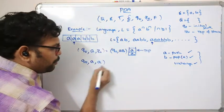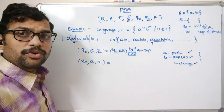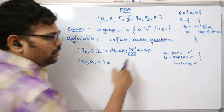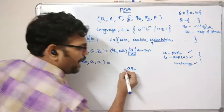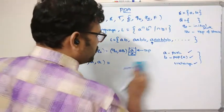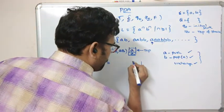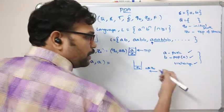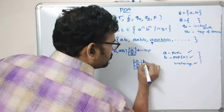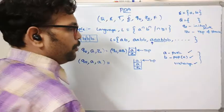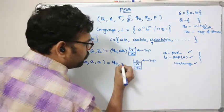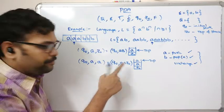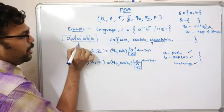Since whenever 'a' is encountered we push, we remove 'az₀' from the top, add the new 'a', and push back into the stack. After pushing from right to left — z₀, then a, then a — the top of the stack is 'a' again. The state remains q₀ and the resultant stack content is 'aaz₀'.